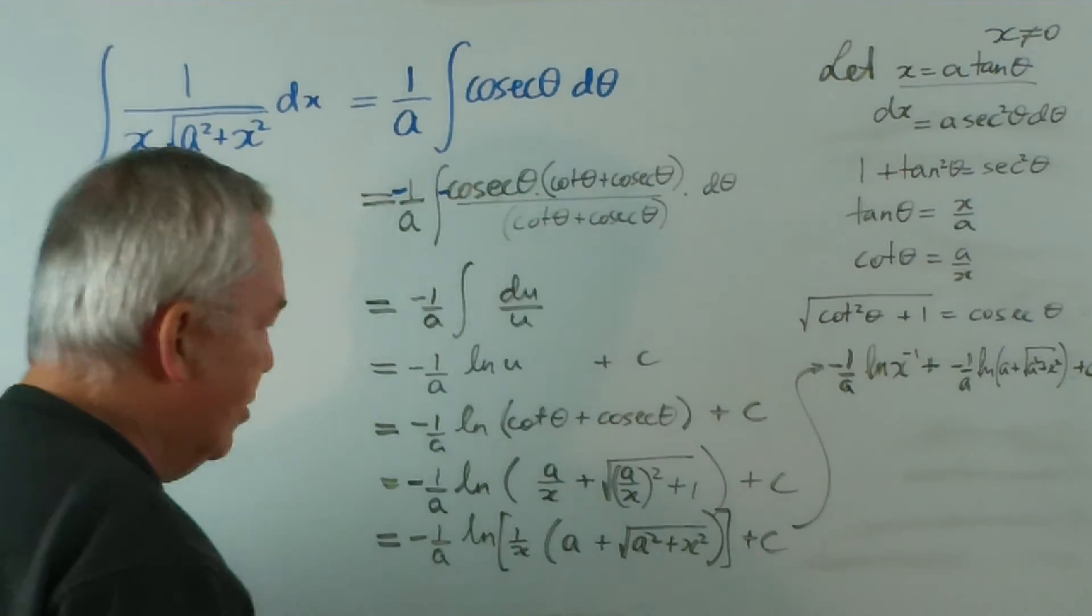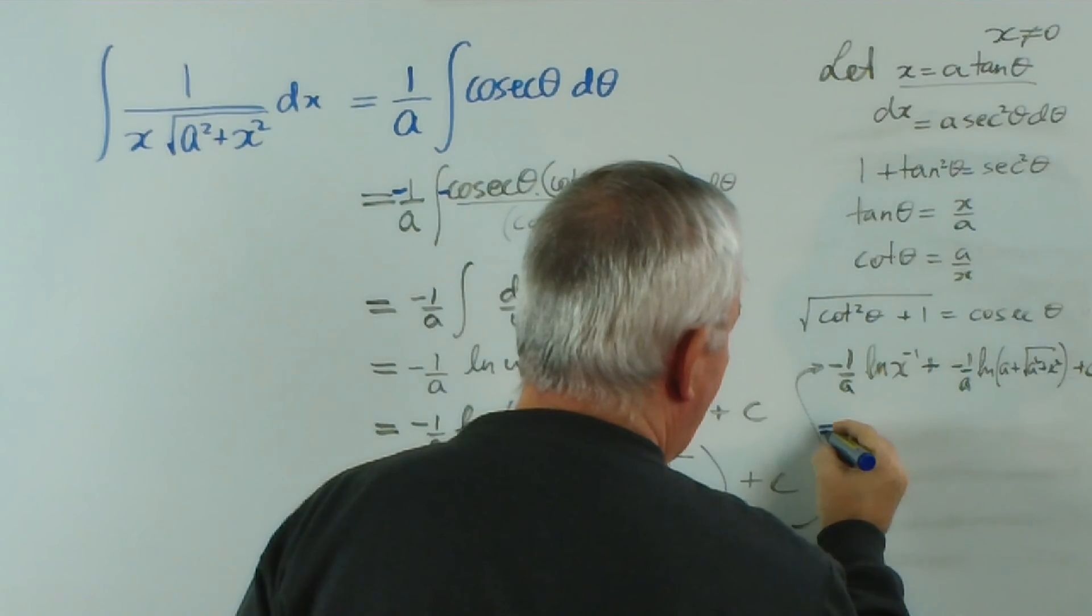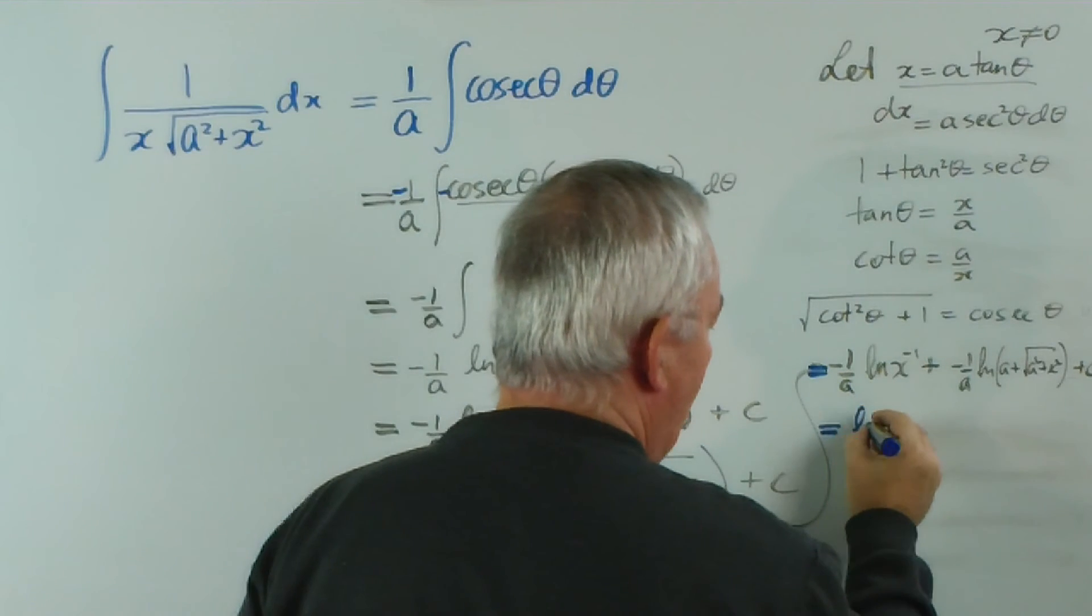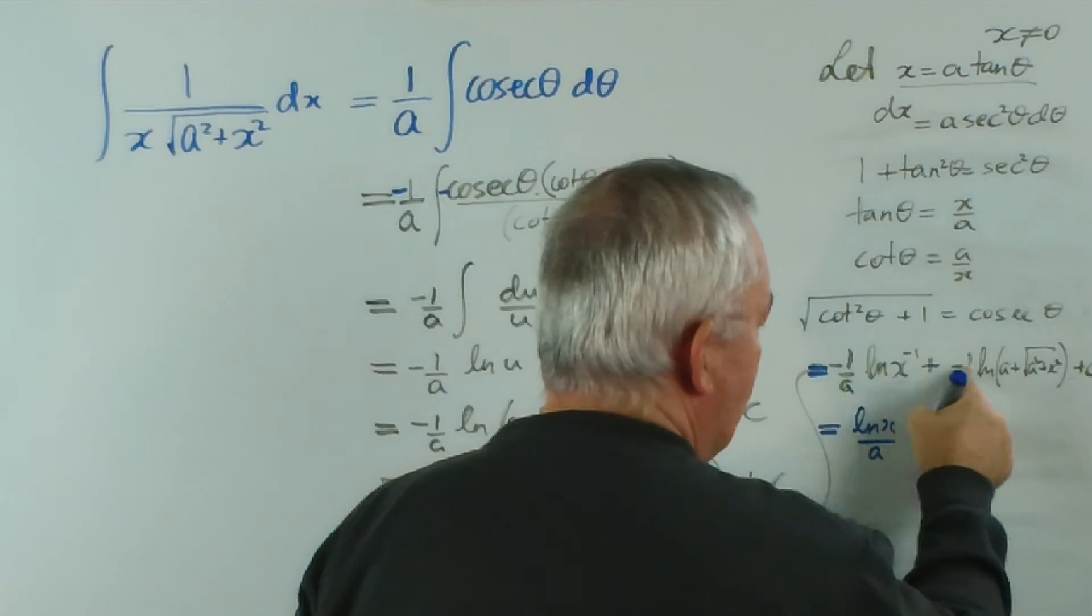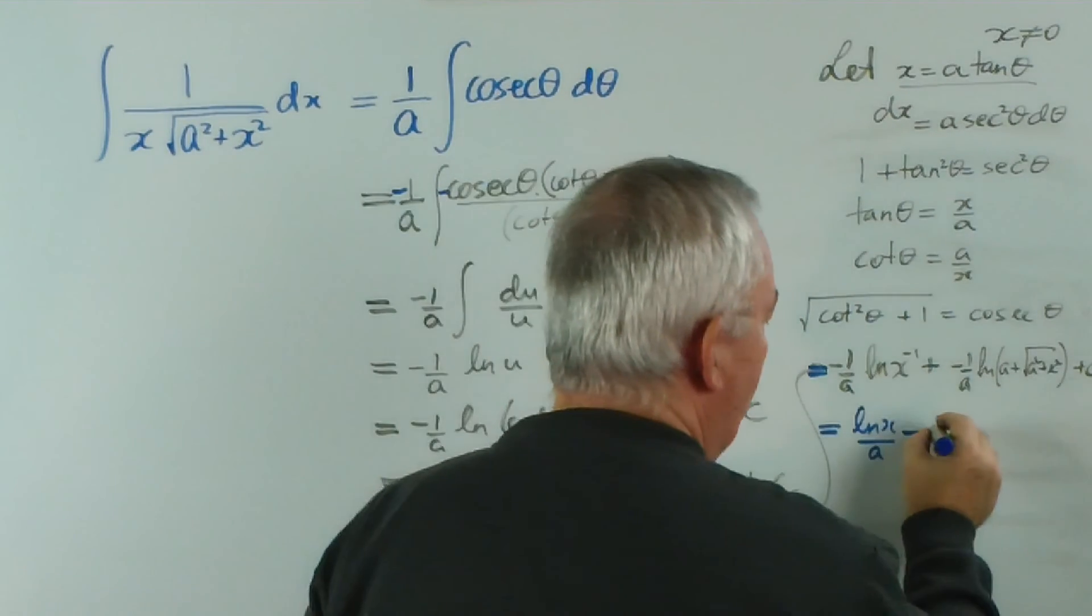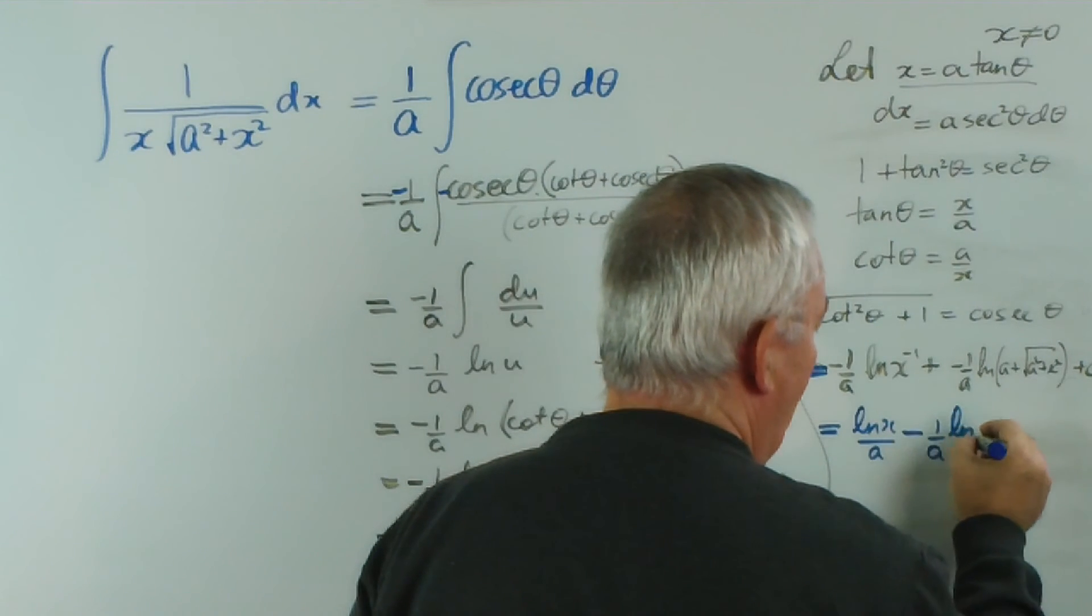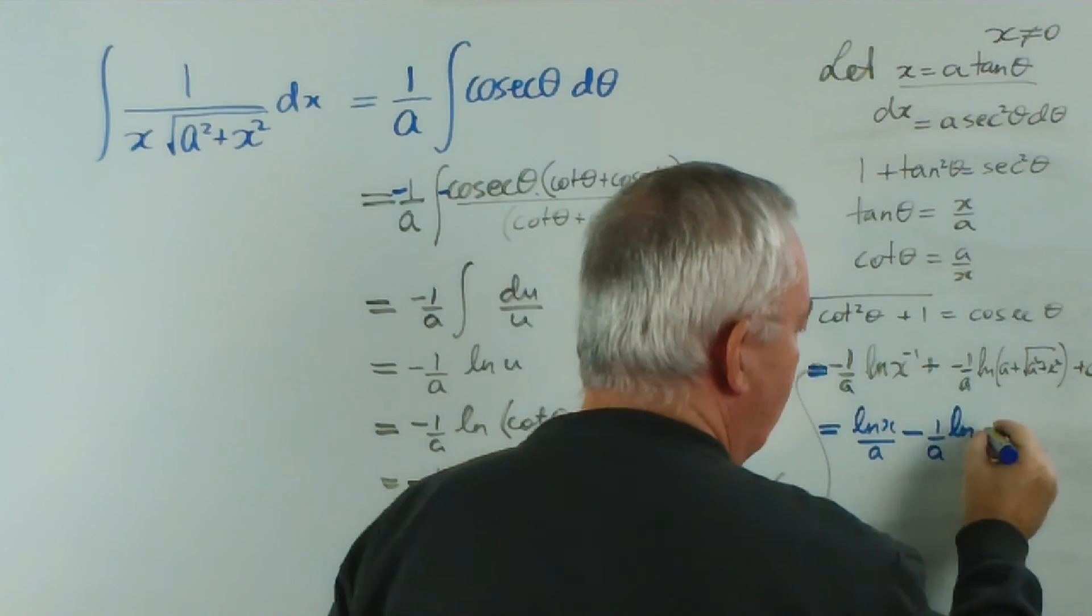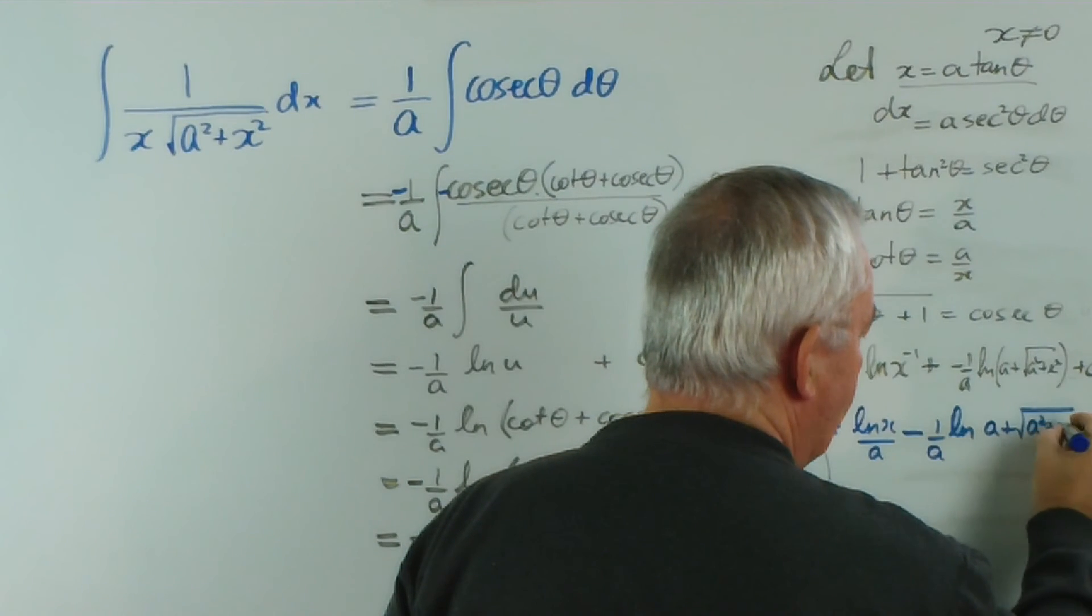Now, I think I'm going to write the answer in blue because it will just look a little bit better. The negative sign will come out. So this will be log x on a, plus minus will be minus 1 on a, or actually yes, I'll leave it in the front, log. Now, you could write this in whichever order you like. I'll just leave it as a plus root a squared plus x squared plus c.